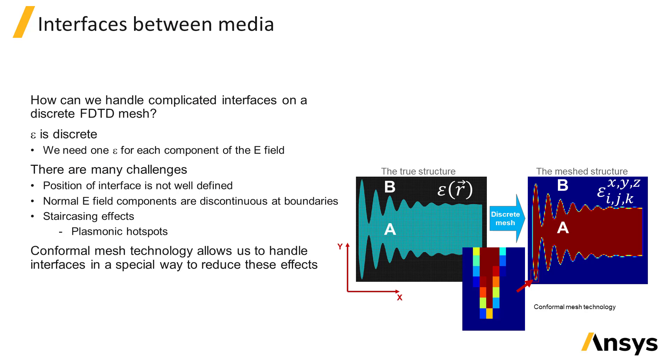As a result, we need a different value for the X, Y, and Z components of the permittivity, even if all materials are isotropic.